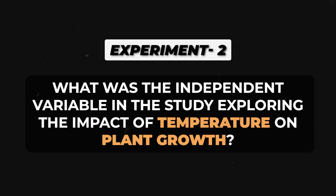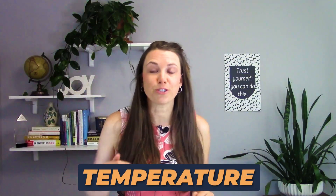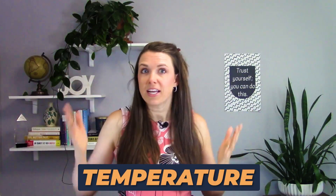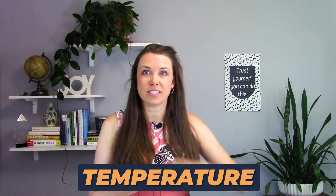Experiment two: what was the independent variable in the study exploring the impact of temperature on plant growth? Imagine three plants growing in different temperatures — a warm room, a hot room, and a super hot room. The independent variable is what I change: the room temperature. And then the dependent variable is the plant growth.